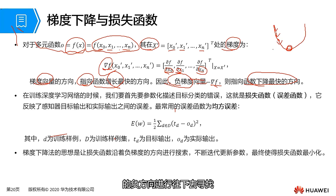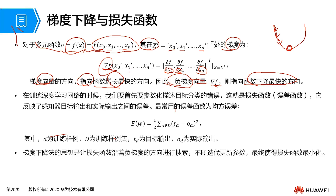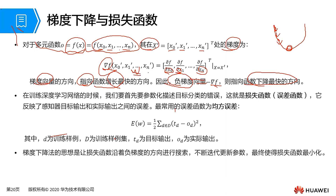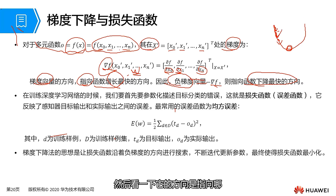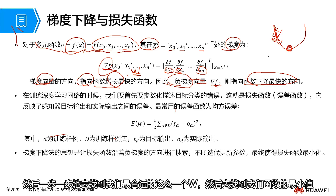If we want to find the minimum value of our loss function, we must search downwards step by step in the negative direction of the gradient. At each step, we update a parameter inside our model — specifically the weight w. After updating this weight, we calculate a partial derivative, determine its direction, derive a new w, and step by step find the most suitable w to locate the minimum value of our function.